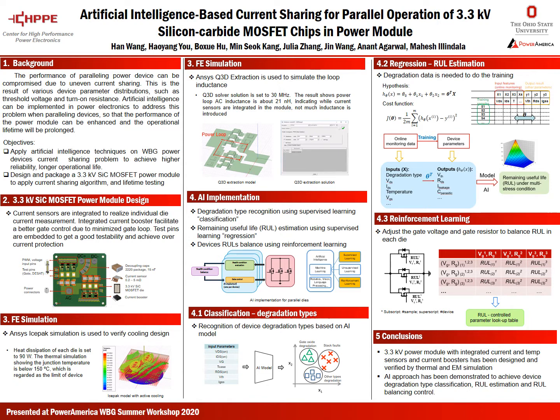Then, we will apply regression to estimate the remaining useful life. It is a mapping process between the detectable device parameters and undetectable parameters, which are more likely to represent device health status. For example, we will use the turn-on current, turn-on voltage, and device temperature to map the device threshold voltage and on-state resistance. And then, we will use these crucial data to estimate the health status and estimate device remaining useful life.